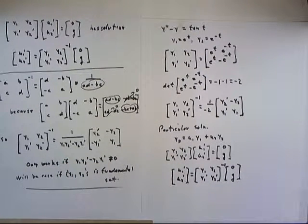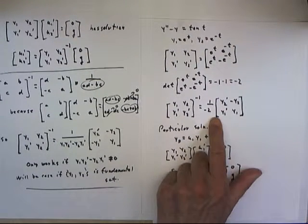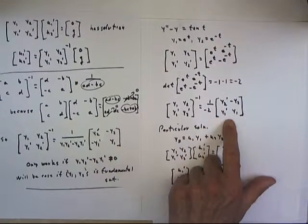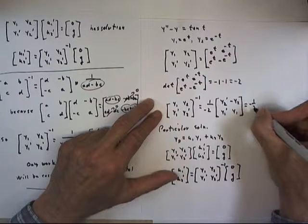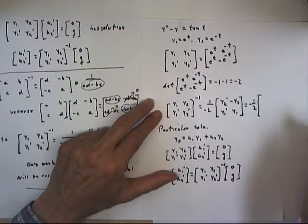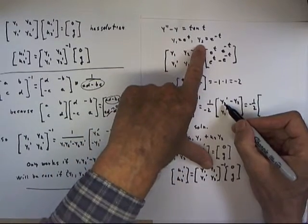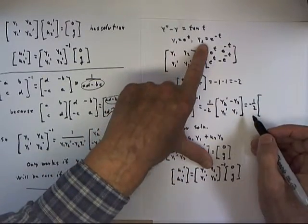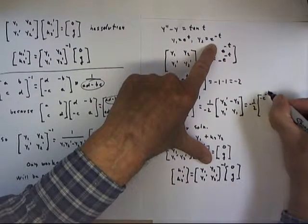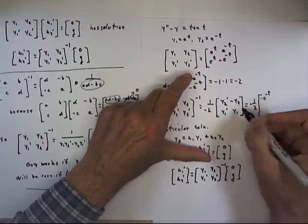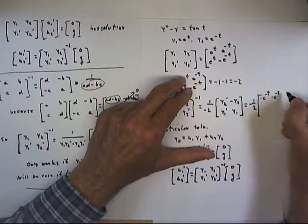And what's the inverse of this matrix? Well, it's here. Now I should have gone ahead and written it out. Up here, y2 prime, remember that y2 is our e to the negative t. So its derivative is negative e to the negative t. And negative y2 is negative e to the negative t.